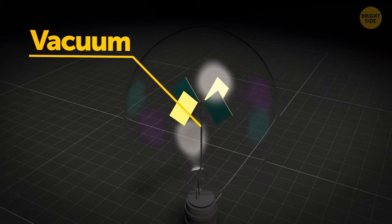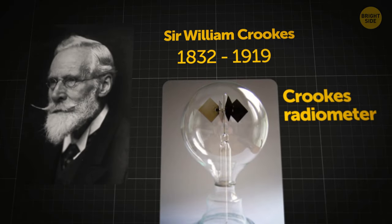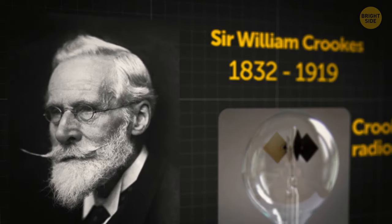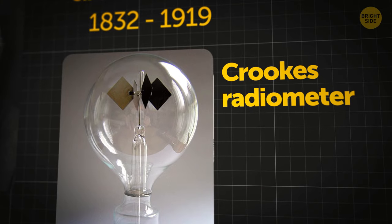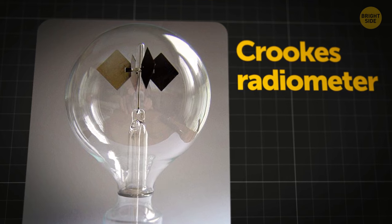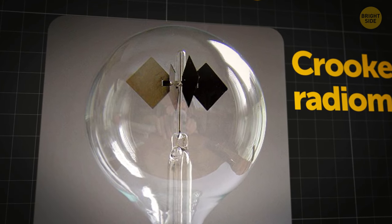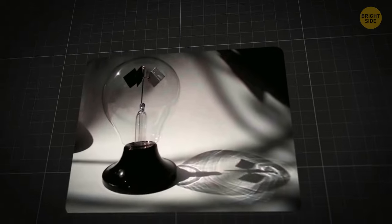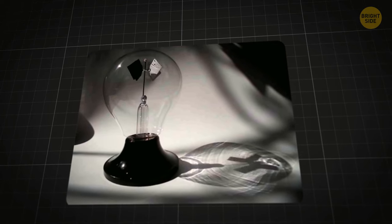This is a space with no matter inside. In 1873, Sir William Crookes discovered a perpetual motion machine that used the vacuum, Crookes' radiometer. He was a British chemist and physicist. The man was a pioneer of vacuum tube technology. His device resembled a tiny windmill trapped in a glass light bulb.